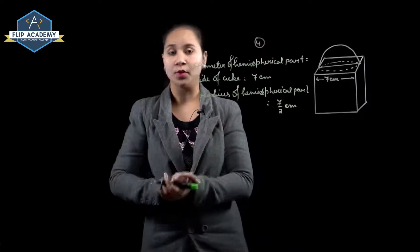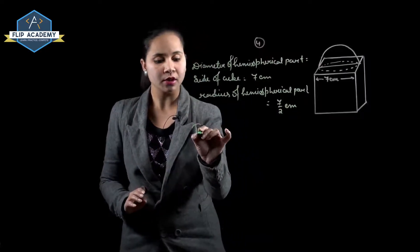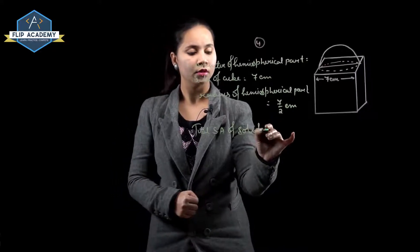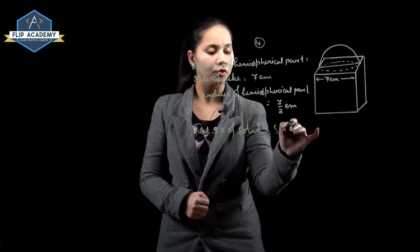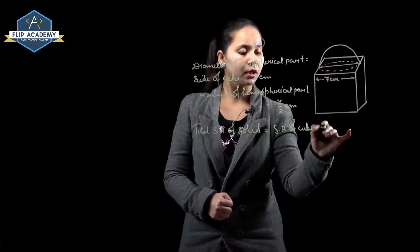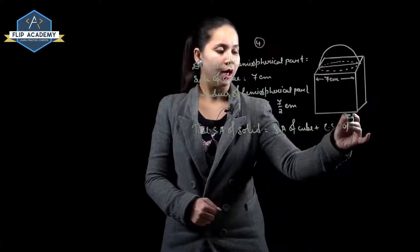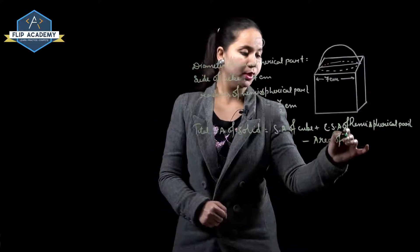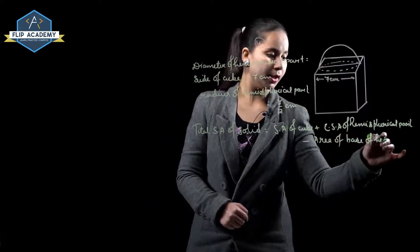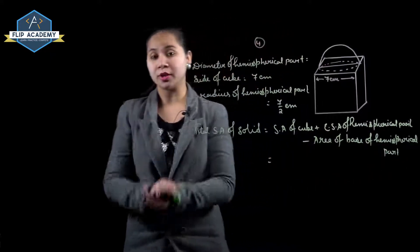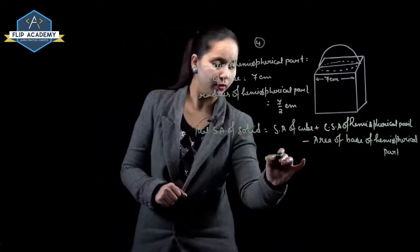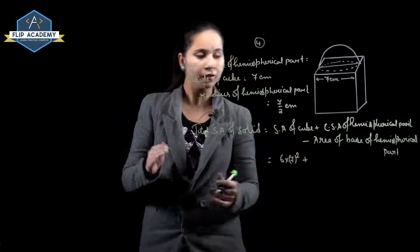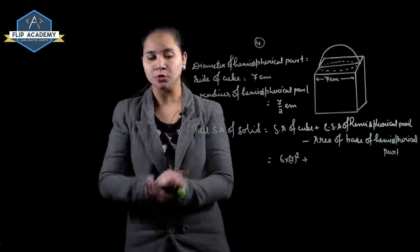Total surface area of the solid equals surface area of cube plus curved surface area of hemispherical part minus area of base of hemispherical part. Surface area of cube is 6 into side squared, so it is 6 into 7 squared. Curved surface area of hemispherical part is 2 pi r squared.